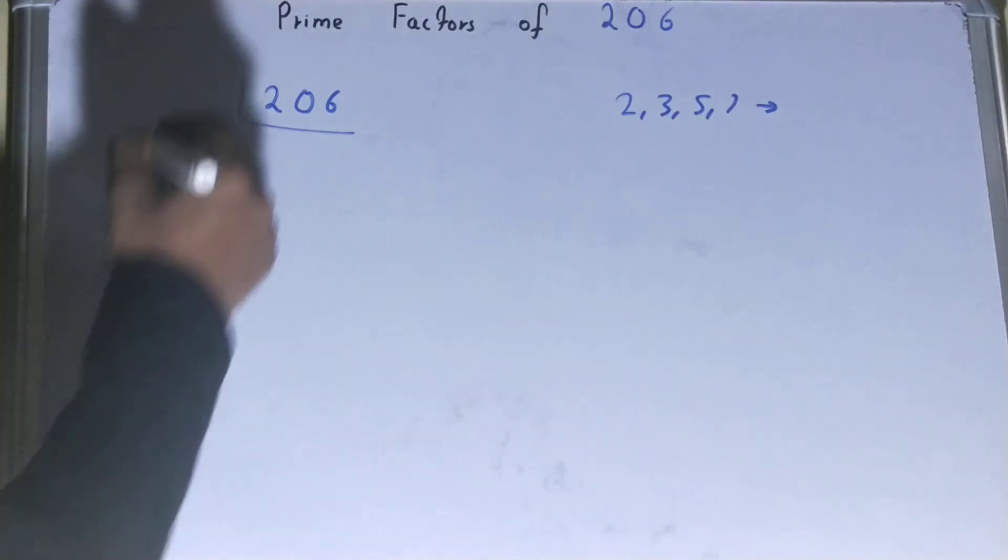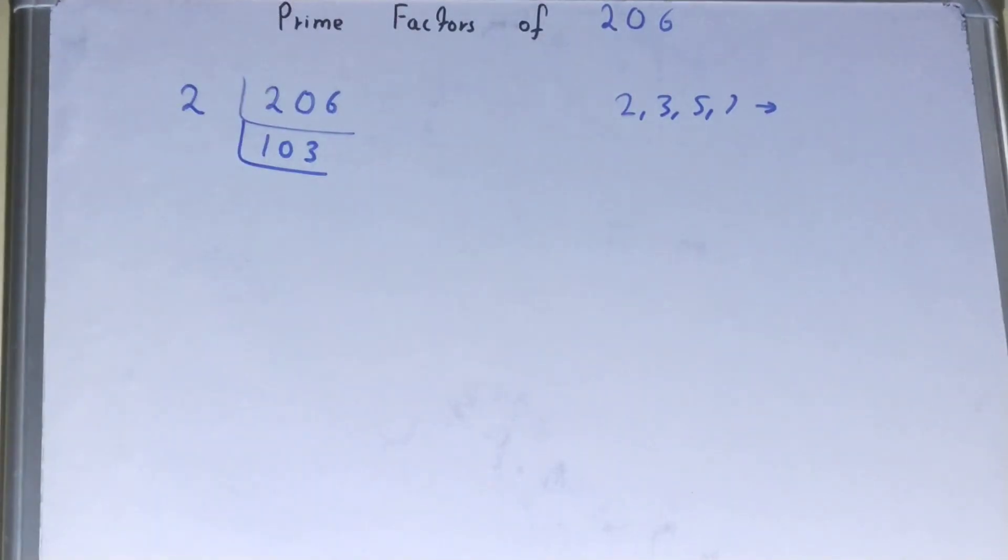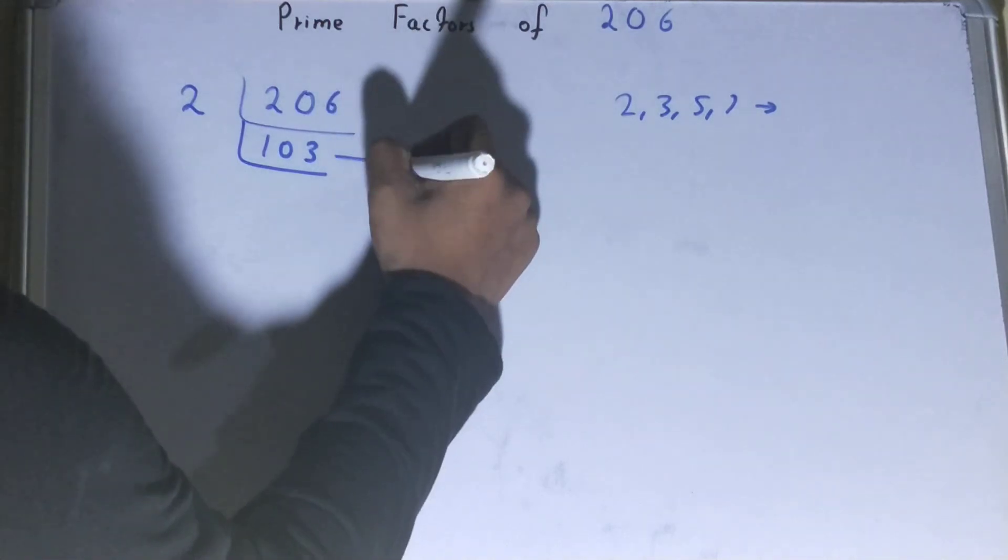So divide it and you'll be left with 103. Now this number 103 is not divisible by two because it is an odd number, and it is also a prime number.